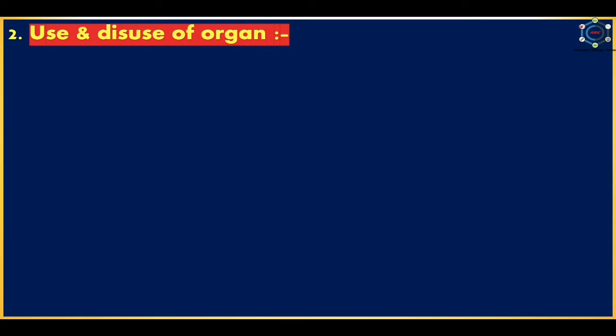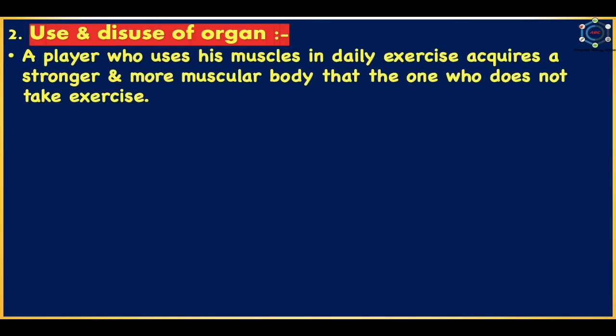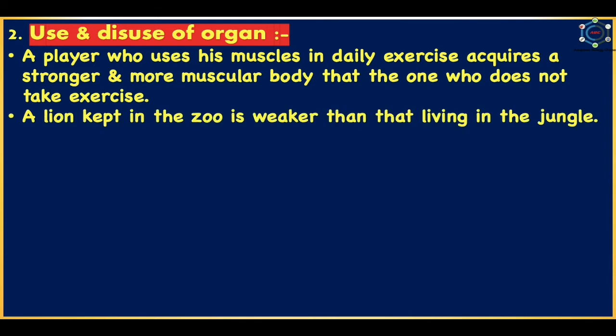The second factor producing somatic variation is use and disuse of organs. Continuous use of an organ makes it better developed, whereas constant disuse makes it reduced. These factors affect higher animals. For example, a player who uses muscles in daily exercise acquires a stronger and more muscular body than one who does not exercise. A lion kept in a zoo is weaker than one living in the jungle, because the former does not use its muscles to capture food.